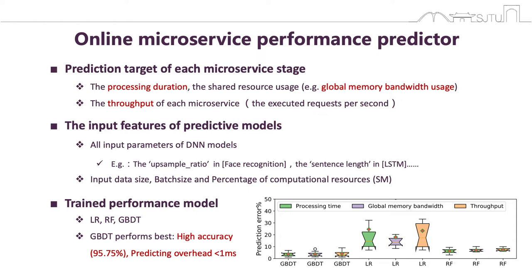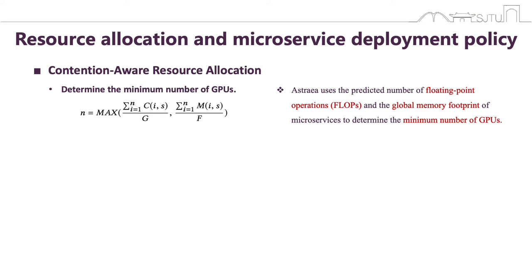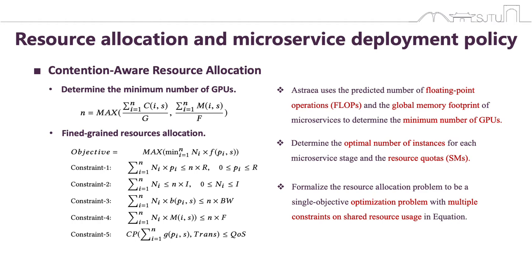The second part in Astria is resource allocation and microservice deployment. We first determine the resource allocation for each microservice instance and then identify an appropriate microservice deployment. Based on our prediction, we design a contention-aware resource allocation policy. Specifically, we first determine the minimum number of GPUs, using the predicted number of FLOPs and global memory footprints of microservices. Second, we determine the optimal number of instances for each microservice stage and the resource quotas allocated to each instance. We formalize the resource allocation problem as a single-objective optimization problem. The objective function is to maximize the smallest throughput of microservices in a multi-stage service.